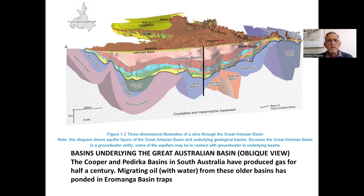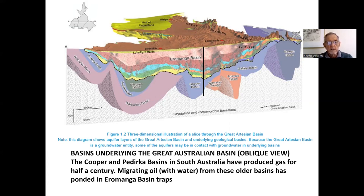The result from subsidence was influenced by the long-term subduction of the Pacific Ocean plates beneath the Australian or Eastern Gondwana mainland. The Cooper and Poderka Basins in South Australia produced gas for half a century, and migrating oil with water from these older basins has ponded in some of the Eromanga Basin traps, which has proved very valuable for oil in more recent years.